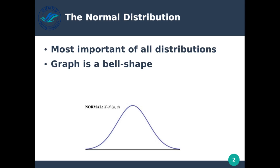Most data sets that we have tend to follow this pattern. Anything that we would measure in nature tends to eventually approach a normal distribution the more times we measure things. The normal distribution is a bell-shaped curve. Grades in a class tend to be normally distributed, with the majority of people landing somewhere in the center. There are very few top grades and very few bottom grades.